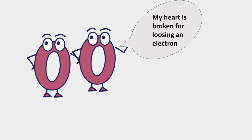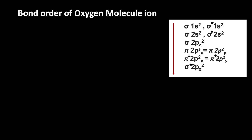The oxygen molecule ion O2+ is formed when the oxygen molecule loses one electron. Since oxygen molecule has two oxygen atoms, the total number of electrons in the oxygen molecule is 16. When it loses one electron, we get O2+ ion, so the number of electrons present in the oxygen molecule ion is 15.